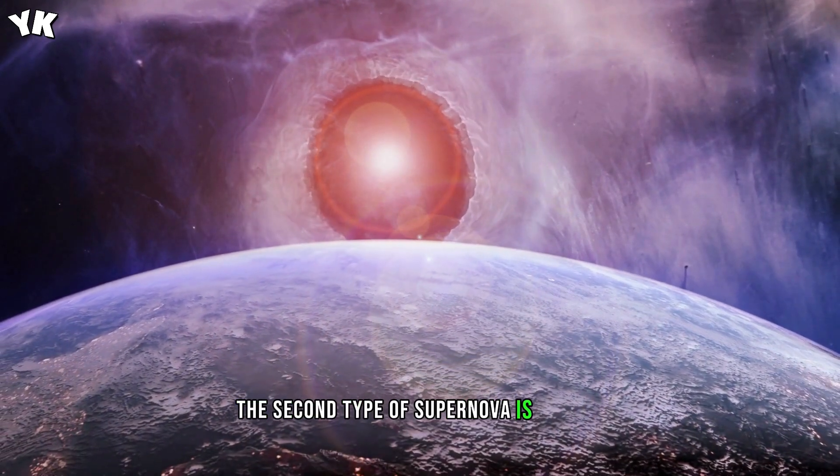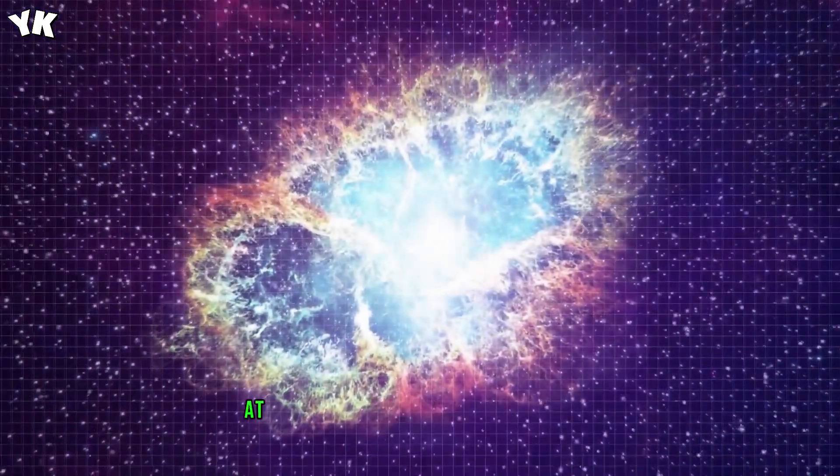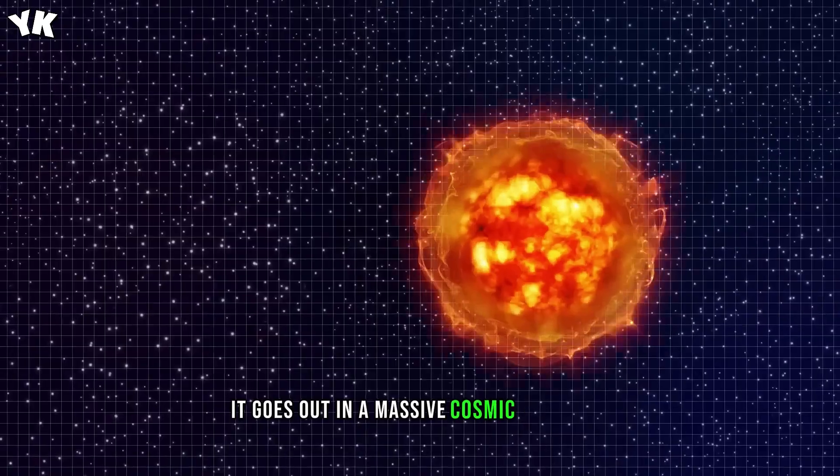The second type of supernova is formed during the death of giant stars. When a star at least five times the size of our sun is about to die, it goes out in a massive cosmic explosion.